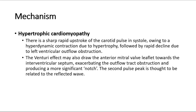In hypertrophic cardiomyopathy, there is a sharp rapid upstroke of the carotid pulse in systole, owing to a hyperdynamic contraction due to hypertrophy, followed by rapid decline due to left ventricular outflow obstruction. The venturi effect may also draw the anterior mitral valve leaflet towards the interventricular septum, exacerbating the outflow tract obstruction and producing a more significant notch. The second pulse peak is thought to be related to the reflected wave.